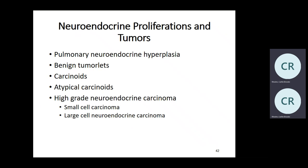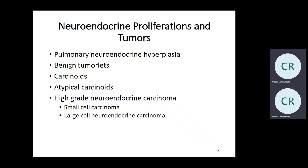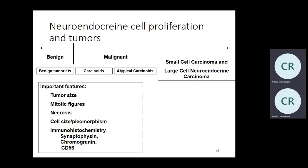When you have neuroendocrine tumors, they arise from neuroendocrine cells within the bronchial epithelium. A small tumor less than five millimeters is a benign tumorlet. Carcinoid tumors are more than five millimeters. The spectrum goes: carcinoid → atypical carcinoid → high-grade neuroendocrine tumors. Under high-grade neuroendocrine, there is small cell and large cell. So when we talk about small cell carcinomas, we're talking only about the small cell subtype.